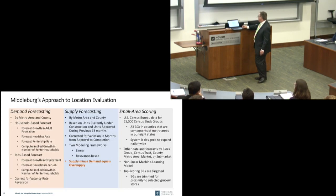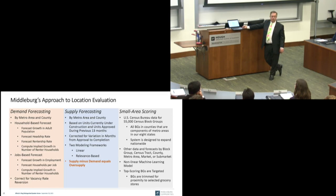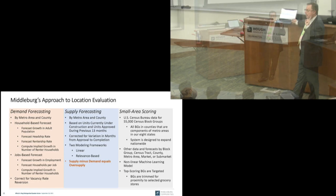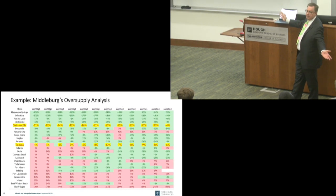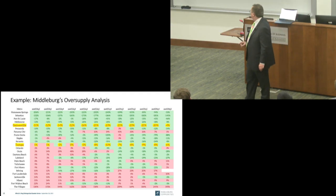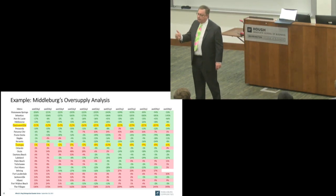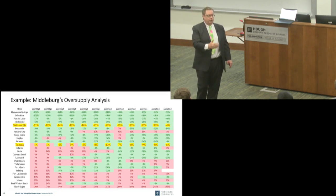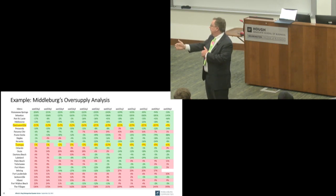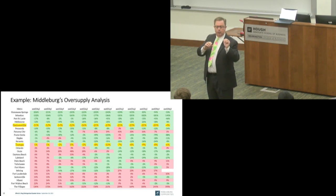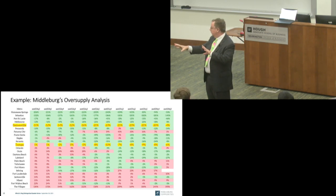Now I want to talk about supply forecasting, and specifically oversupply issues. Oversupply issues are significant around our part of the country — throughout the Southeast, in certain markets but not everywhere. Here is a summary table of all markets in Florida with my latest estimates of the oversupply situation. What I mean by oversupply is: over the next three years, how many more units will be supplied than demanded, relative to the existing housing stock?